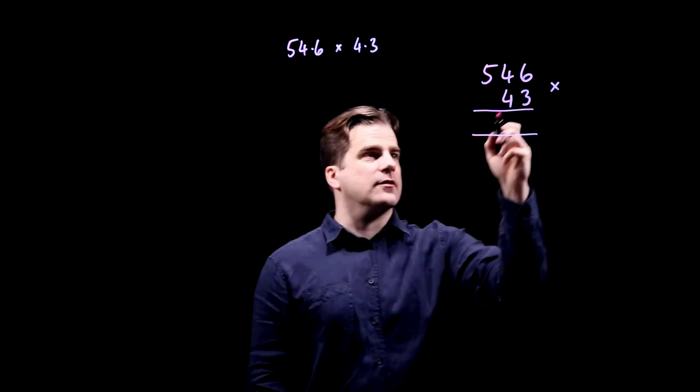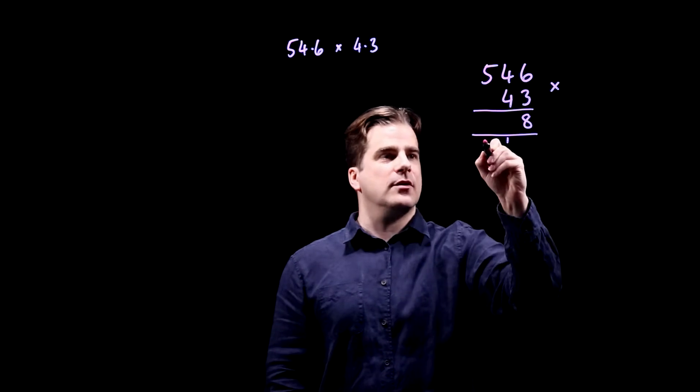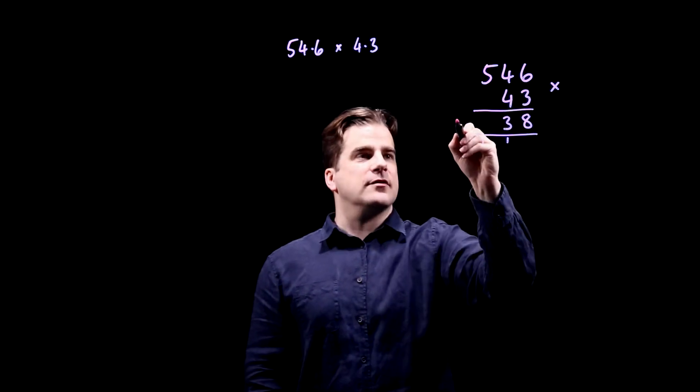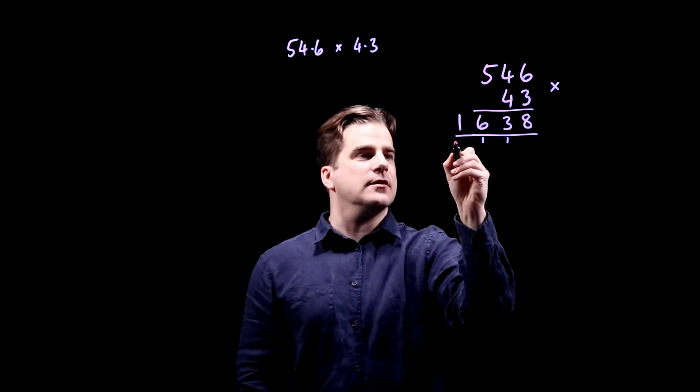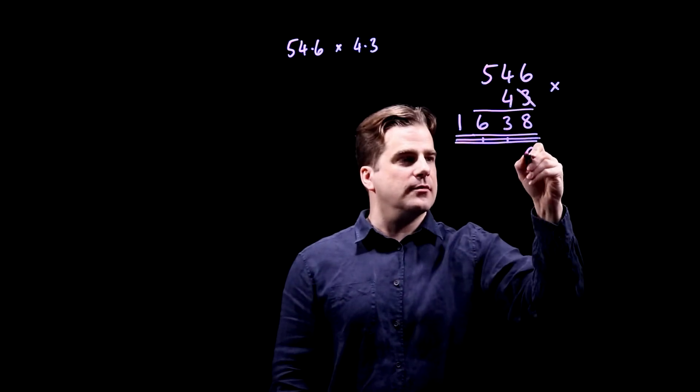First thing: three times six is 18, three times four is 12 plus one is 13, three times five is 15 plus one is 16. Okay good, get rid of these little numbers, cross off the three, put a naught down.